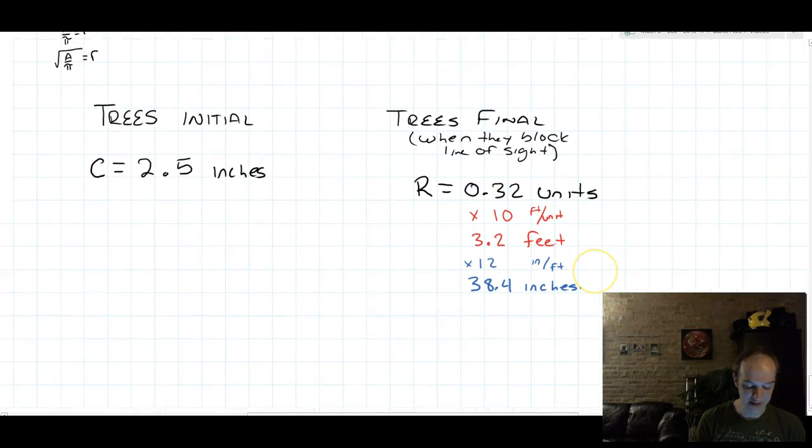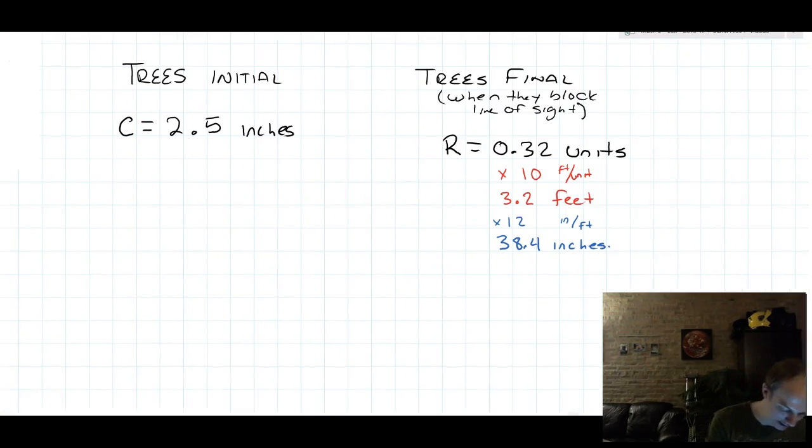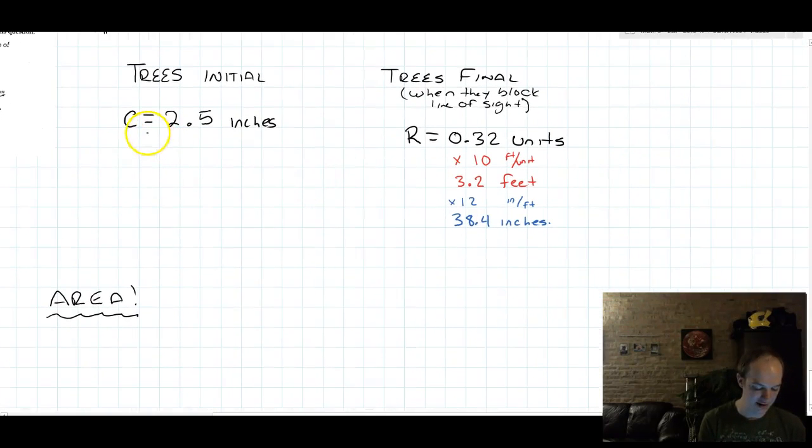Remember, though, what we said at the very start, which is that we want to convert everything eventually into area. So we could approach this by making a chart, or we can just approach this for each tree by solving through for area. For the final tree, we're actually really close to finding the area.